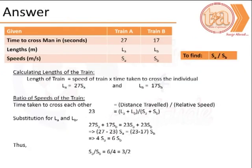Let us look at how we can solve the problem. We begin with the available data: train A takes 27 seconds to cross the individual, train B takes 17 seconds to cross the individual, and the trains take 23 seconds to cross each other.